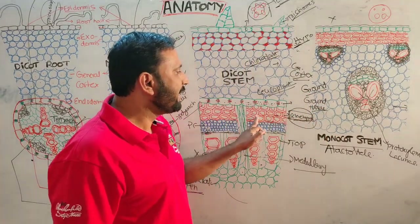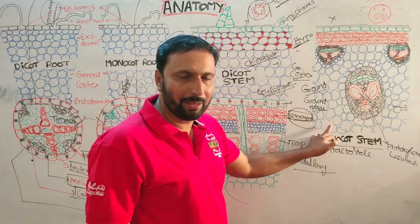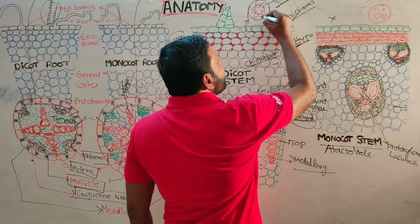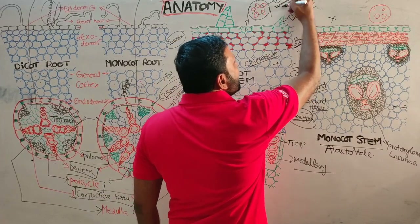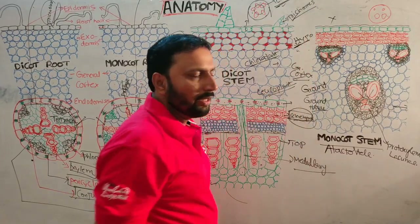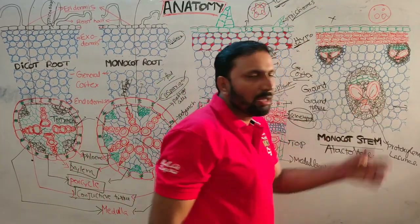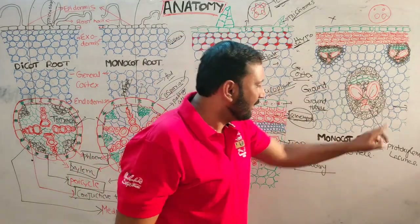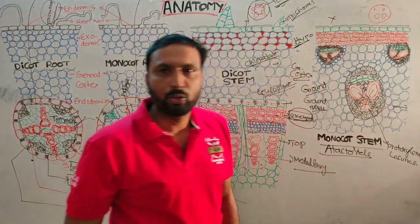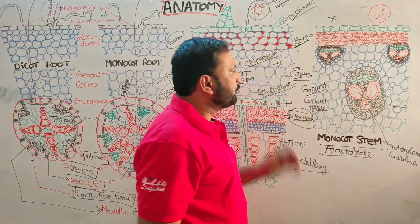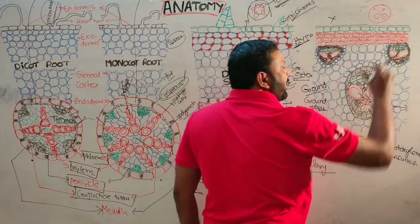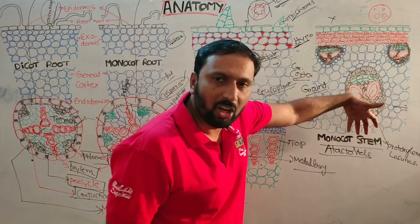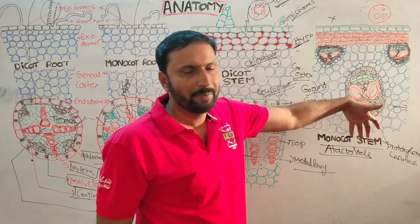In monocot stem, pericycle is absent. Instead of a eustele, all vascular bundles are scattered — that condition is called atactostele. Peripheral vascular bundles are smaller, and vascular bundles towards the center are gradually larger.